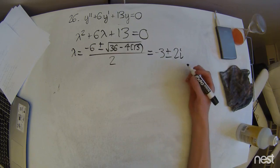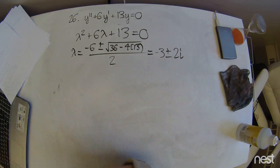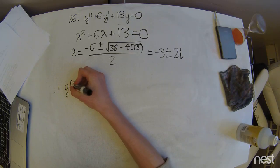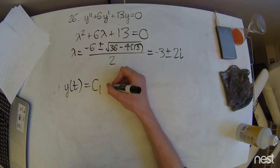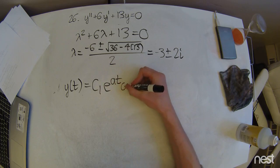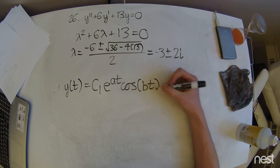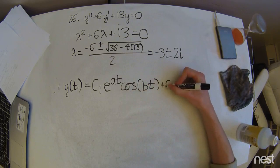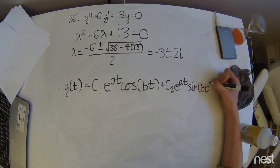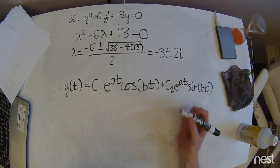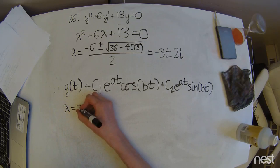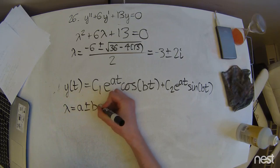Using these roots, we're going to remember that when we have complex roots, we get a solution of the form y of t equals c1 e to the at cosine bt plus c2 e to the at sine bt. Those a and b values come from a complex number of the form a plus or minus bi.